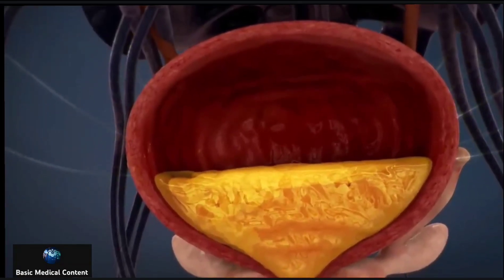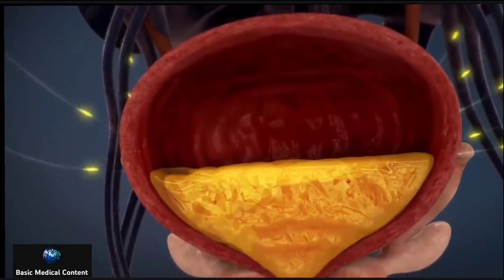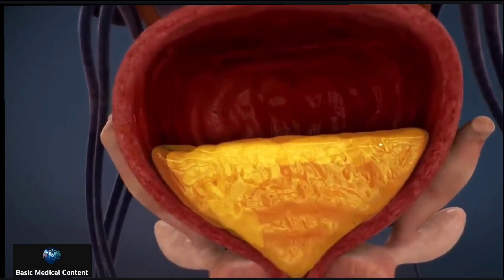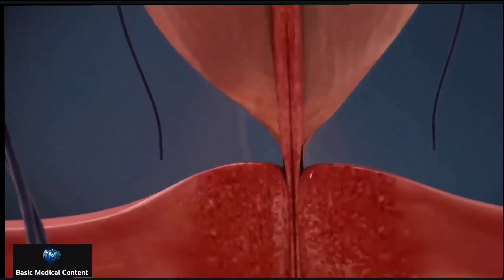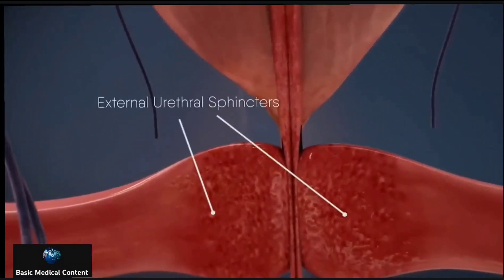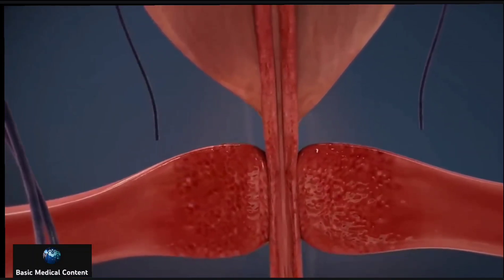Then the brain signals the bladder muscles to tighten, which squeezes urine out of the bladder. At the same time, the brain signals the sphincter muscles to relax to let urine exit the bladder through the urethra.